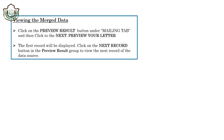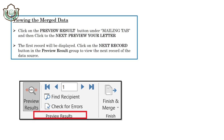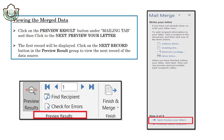For viewing the merge data, click on the Preview Results button under the Mailings tab, then click to preview your letters. The first record will be displayed. Click on the Next Record button in the Preview Results group to view the next record of the data source.